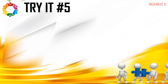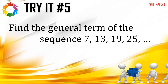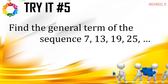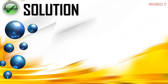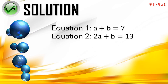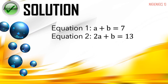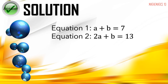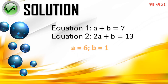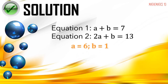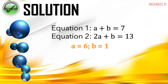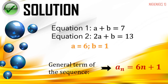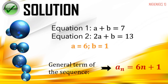Next problem: find the general term of the sequence 7, 13, 19, 25, and so on. The resulting equations are a plus b equals 7 and 2a plus b equals 13. After the elimination process, we get a equals 6 and b equals 1. Therefore, the general term of the sequence is a sub n equals 6n plus 1.